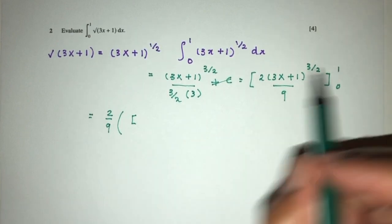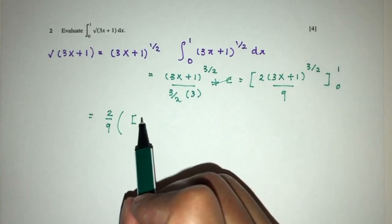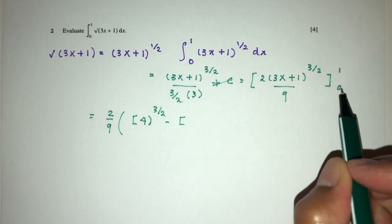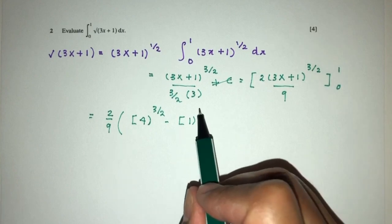So first I will have 1, that will be 3 times 1 plus 1, that should be 4, 3 over 2 and minus, here we have 0, that should be 1, 3 over 2.